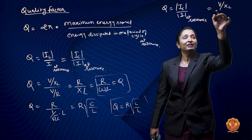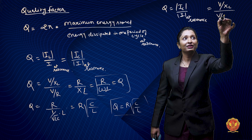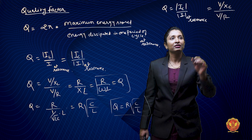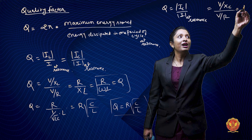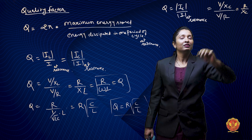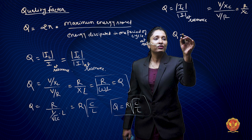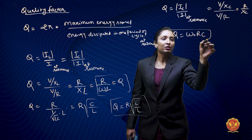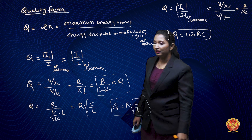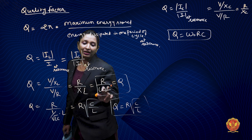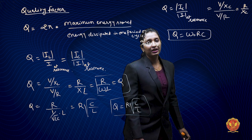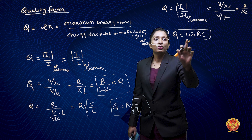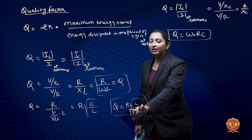Similarly, Q is equal to R divided by (1 divided by √LC) into L. The value of omega is 1 upon √LC, which I have substituted here. So Q becomes equal to R into √(C/L). This gives us the quality factor in terms of R, L, and C parameters.